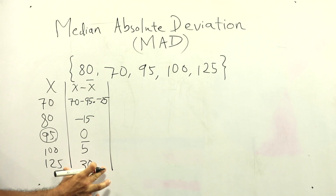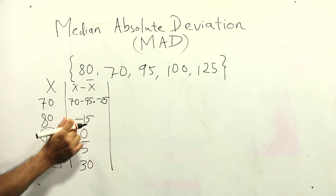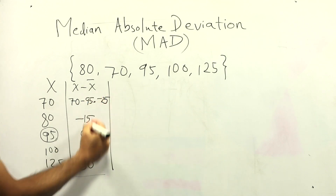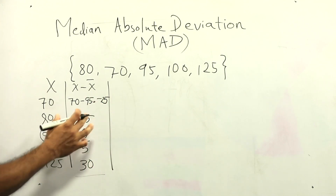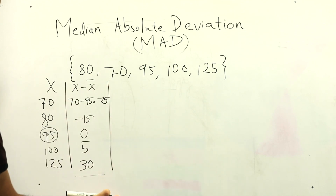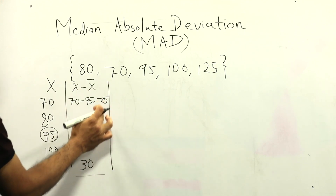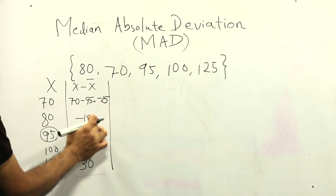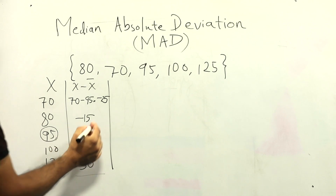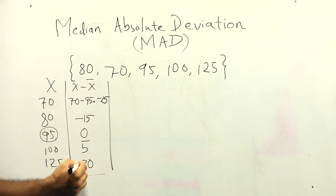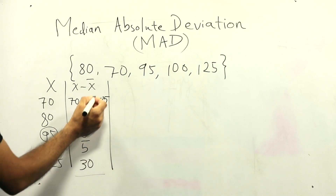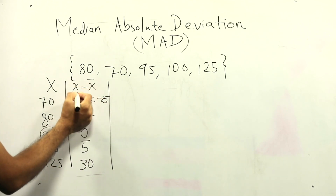Notice that two of these deviation values are negative. If you sum all the deviations, you get a value close to zero — and if we had used the mean instead of the median, the sum would be exactly zero. This means the raw deviations make no sense to sum directly, so we need to take absolute values to get rid of that problem.